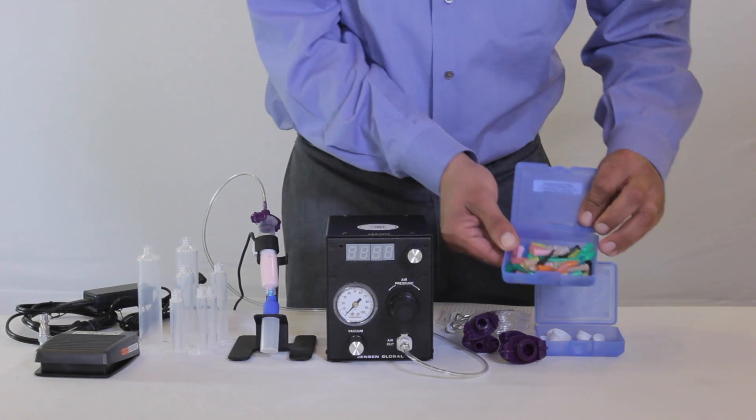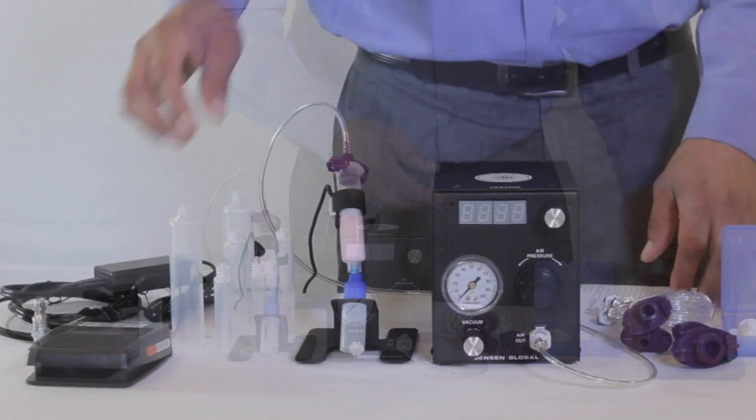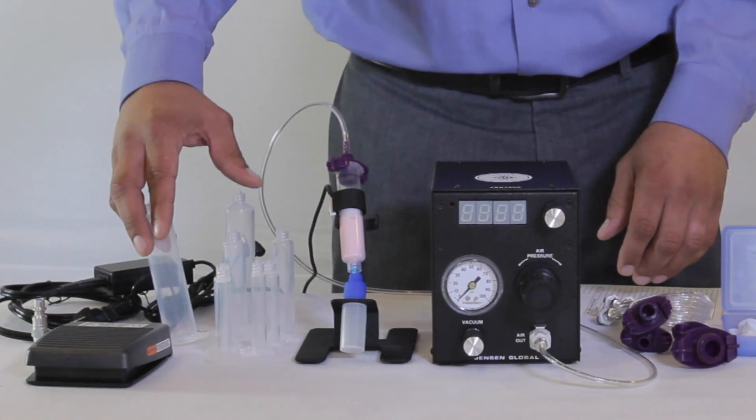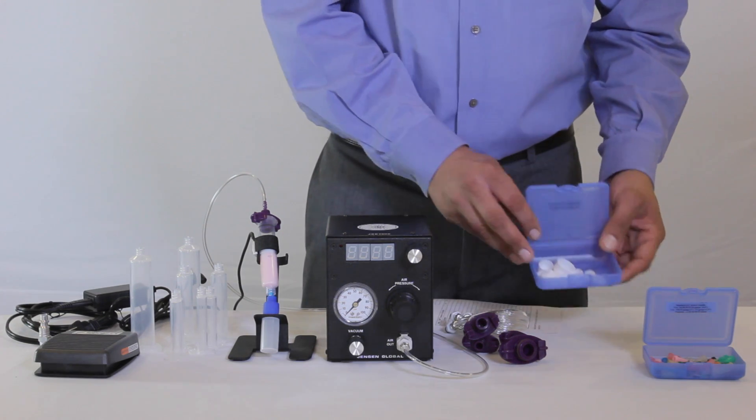A sample kit which contains a variety of different dispensing tips, two each of our lure lock air barrels in 3, 5, 10, and 30 cc sizes, and a box that contains the stoppers for the barrels.